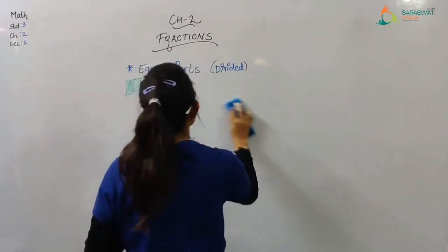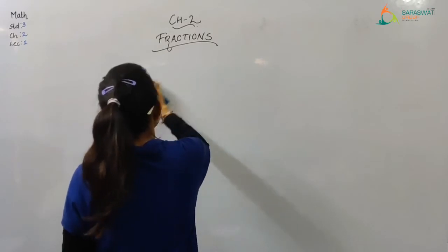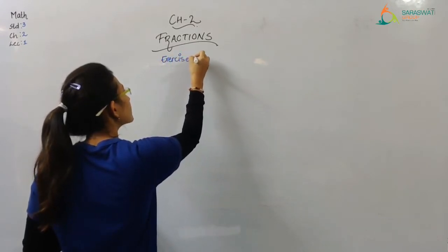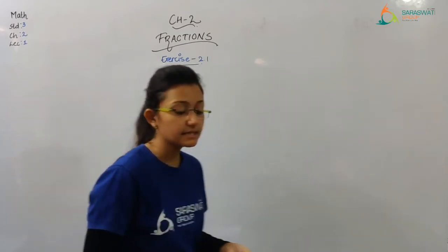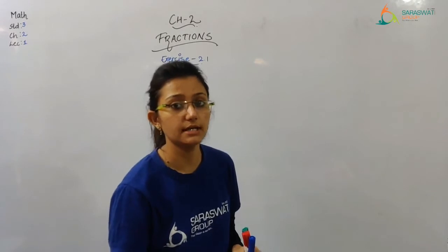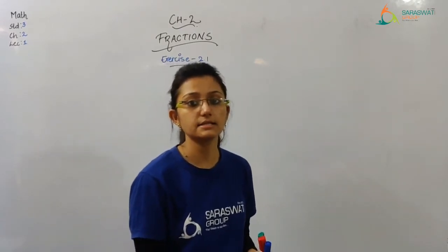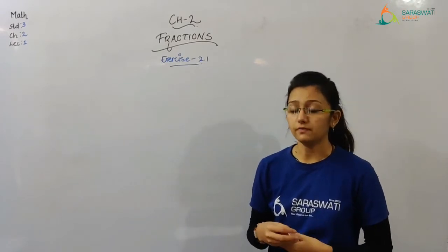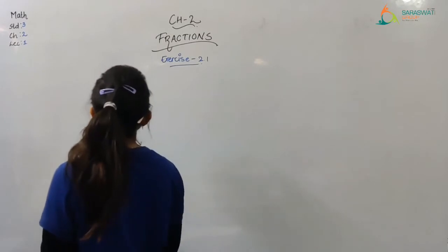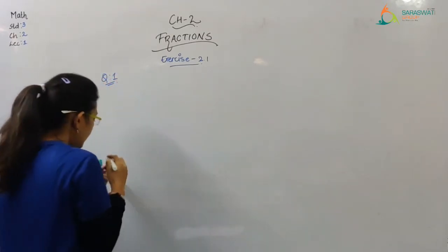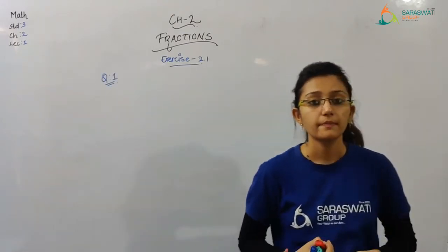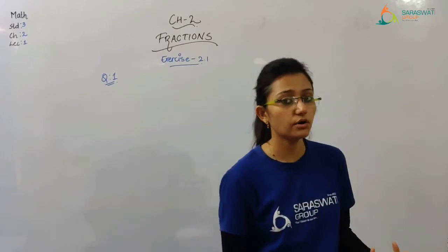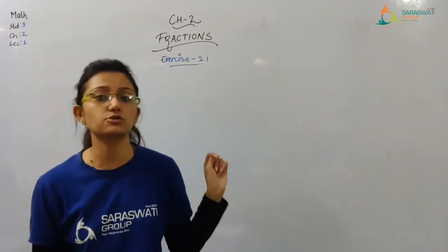We are coming up to exercise number 2.1. There are mainly four to five questions in your exercise and we are going to solve all of them. So in question number one — open your textbook, exercise 2.1 in your second semester textbook. Open it fast; I am giving you some time. Question number one in exercise 2.1 — have you opened it? There are many shapes given to you.